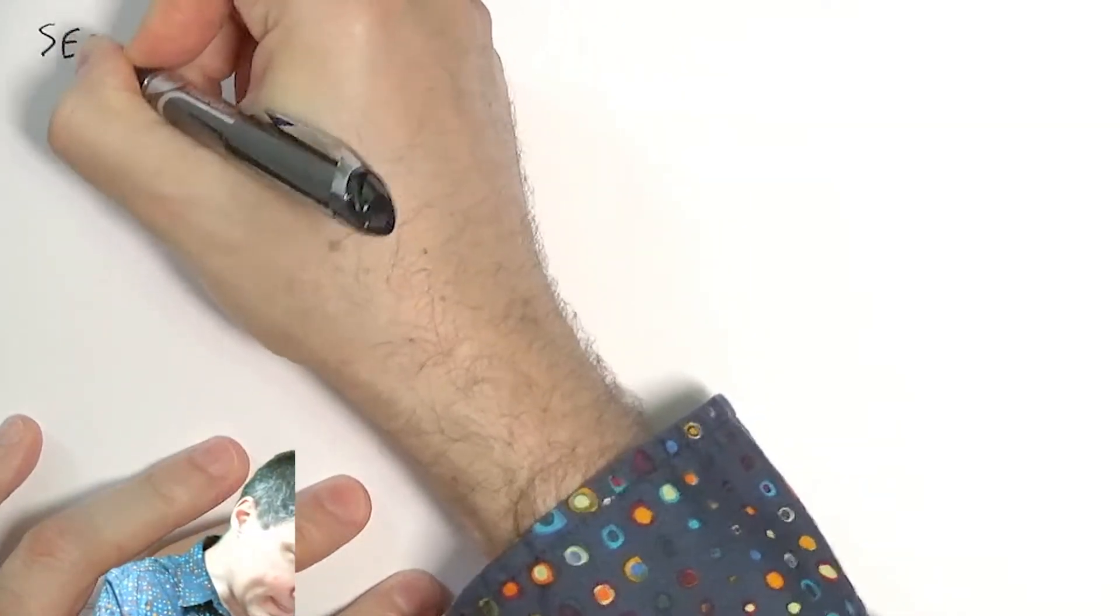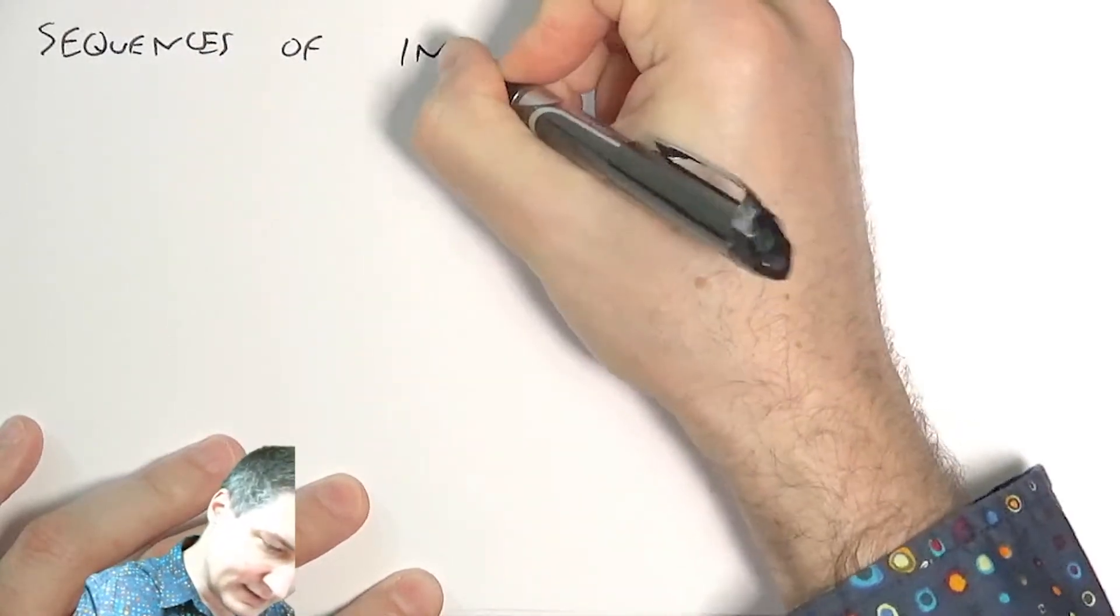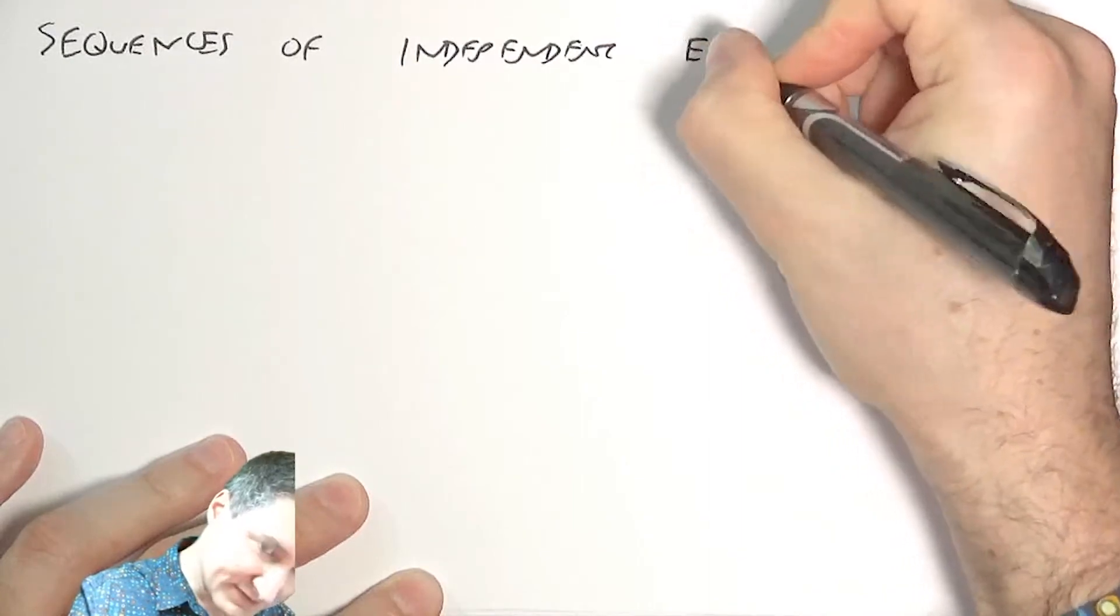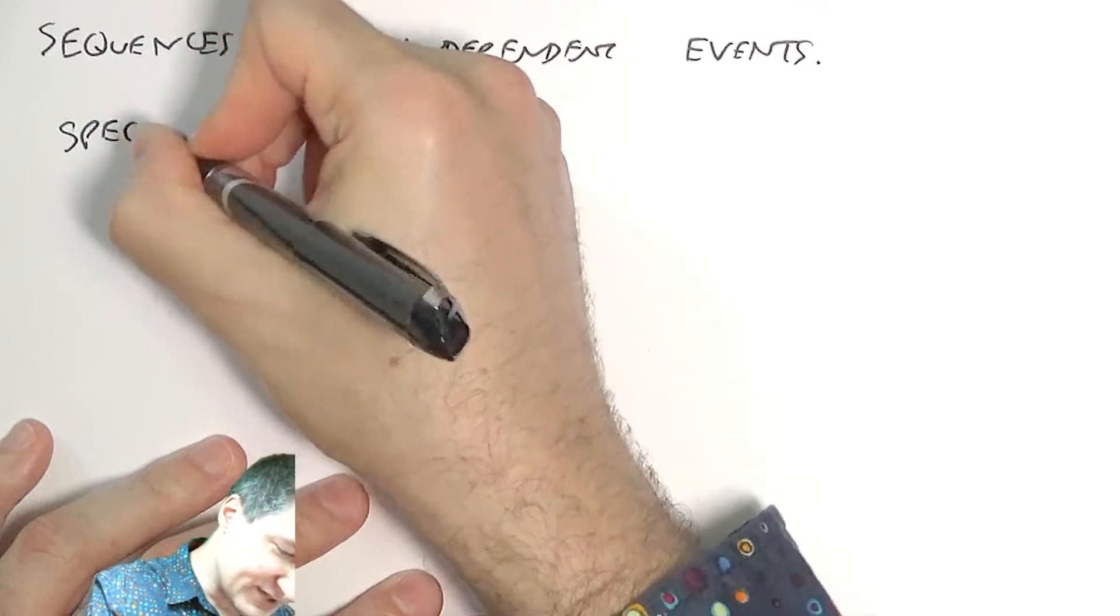A lot of real-world systems can be modeled as a sequence of independent experiments. For example, I keep on flipping a coin and observing what I get on each toss. That's an example of a series of independent events, sequences of independent events.